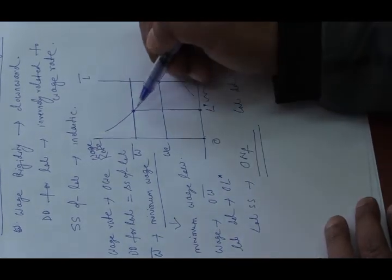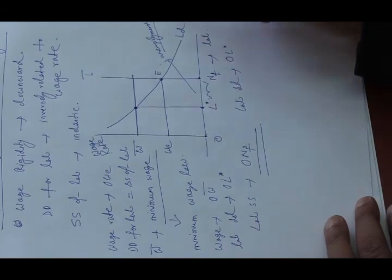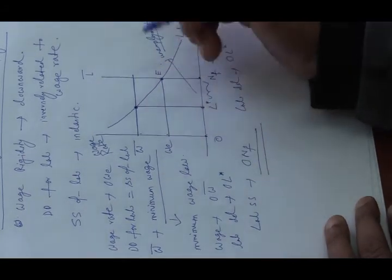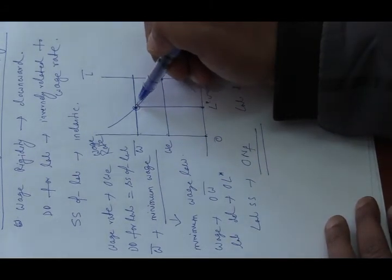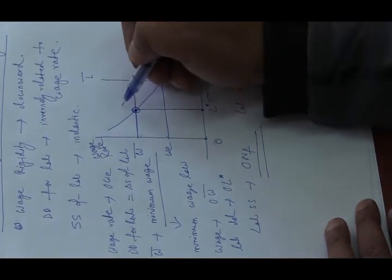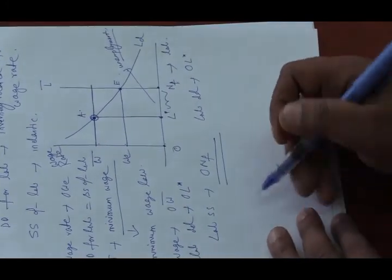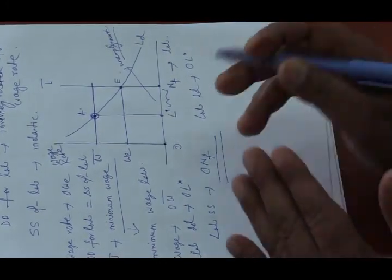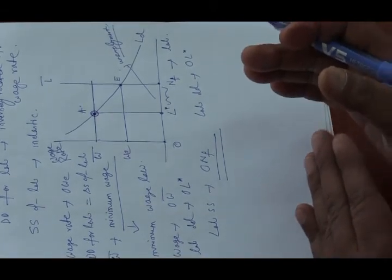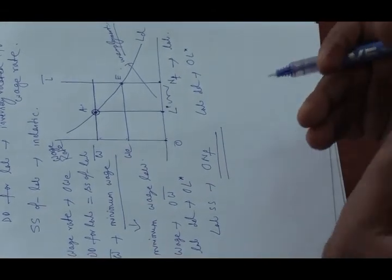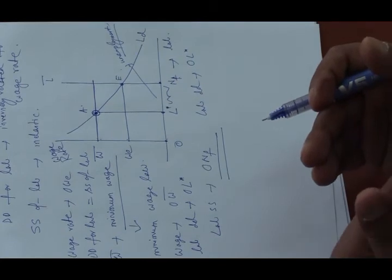Wage rate is not flexible, it is downward rigid, so it cannot fall below W bar. The employment will end up at point E. Here we can see that due to the downward rigidity of wage, the full employment equilibrium cannot be restored.